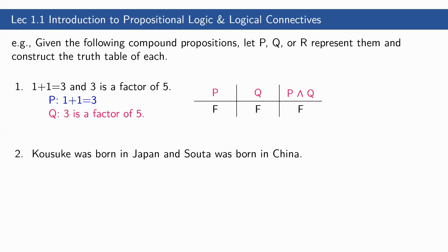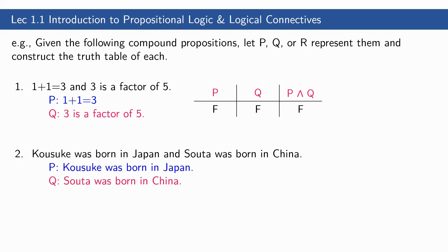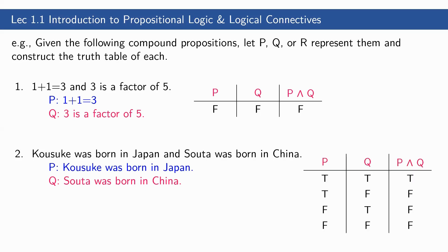Next example: 'Kosuke was born in Japan and Souta was born in China.' We do not know who Kosuke or Souta is. P: 'Kosuke was born in Japan.' Q: 'Souta was born in China.' Since we do not know them, we construct a general truth table — which is simply the truth table for the definition of conjunction.